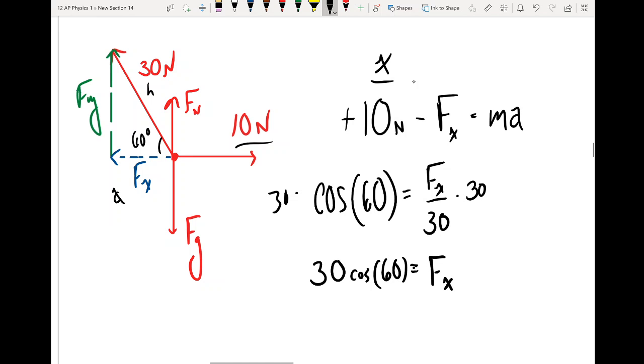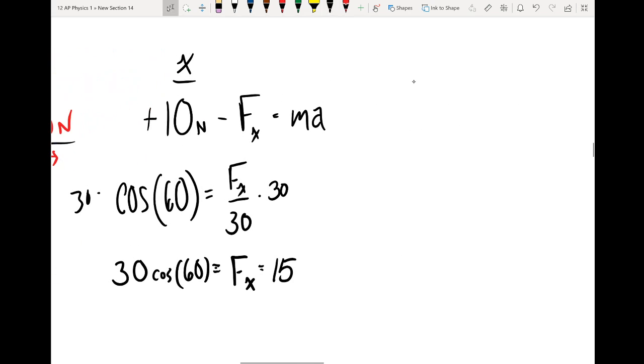So now I have an actual number for Fx, and when I do that, let's see, 30 times cosine of 60 is 15. We'll do 15. So now I can plug into my equation again.